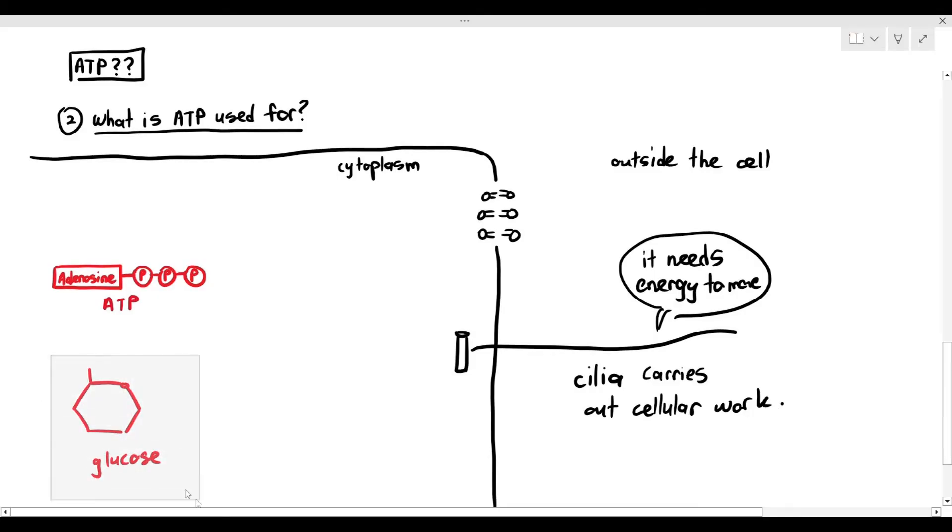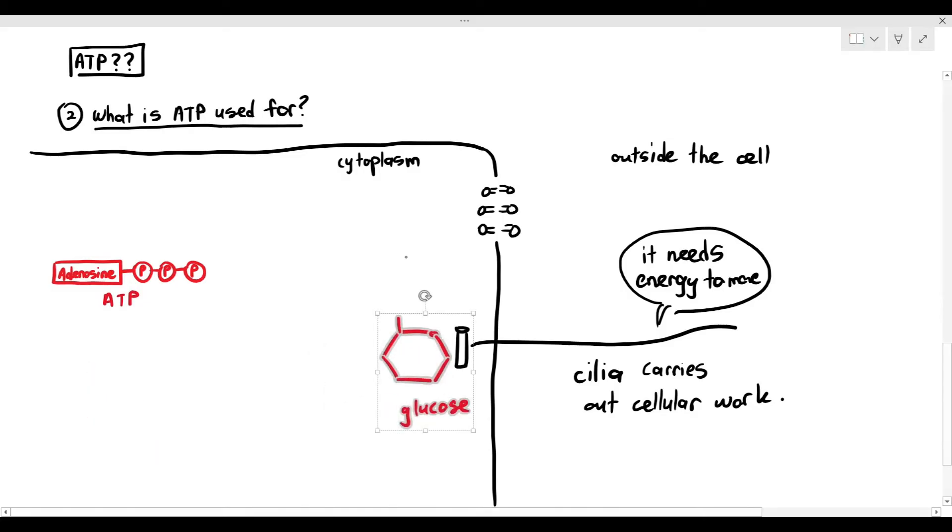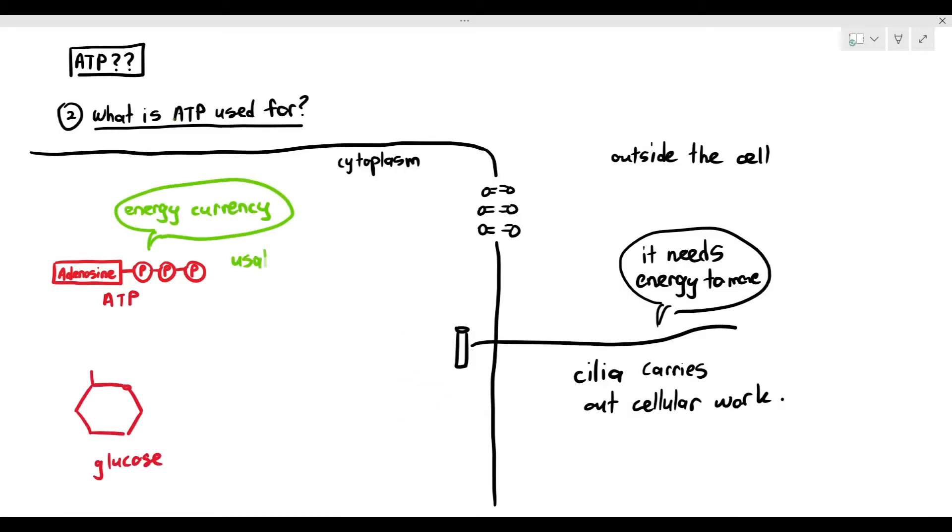If the glucose molecule goes over to the cilium, the cilium is going to be like, what are you doing? I don't know how to use you. The glucose contains chemical energy, but the glucose cannot immediately give its energy to the cilia.